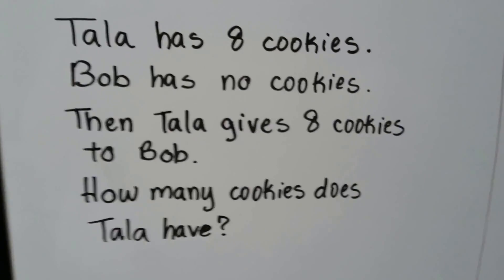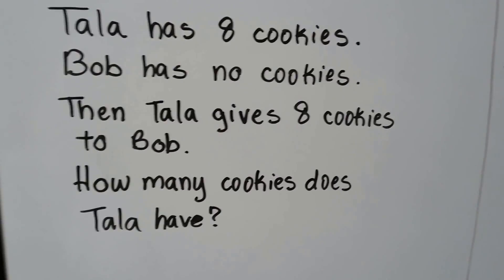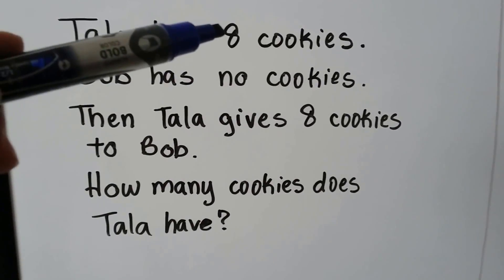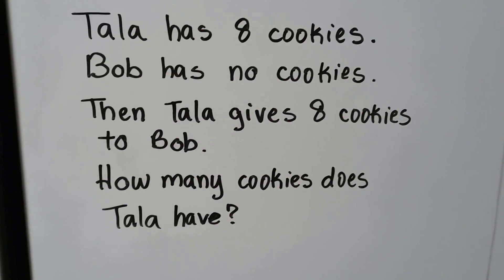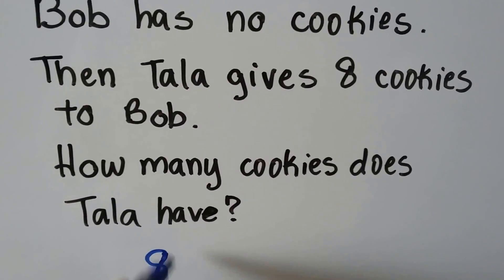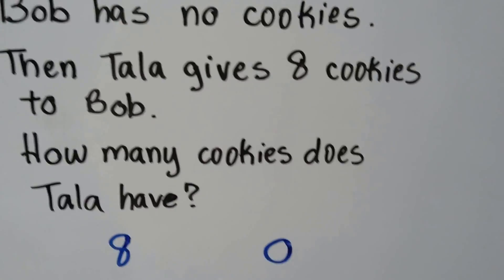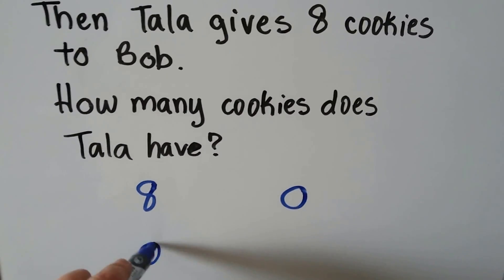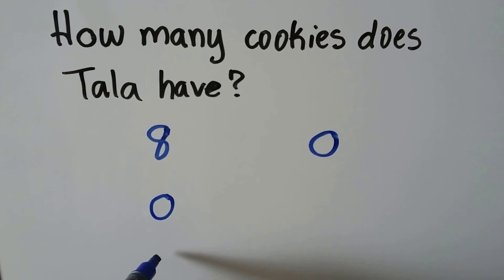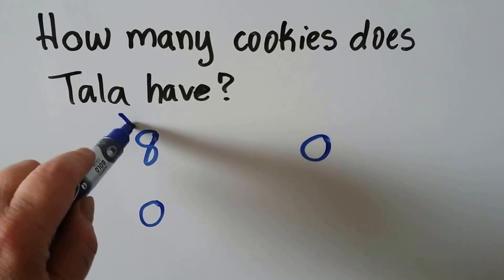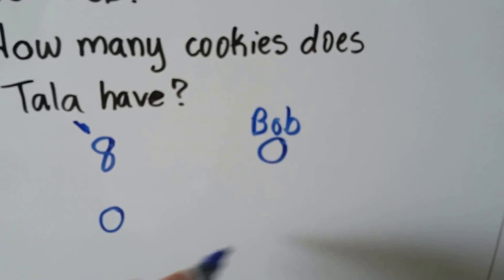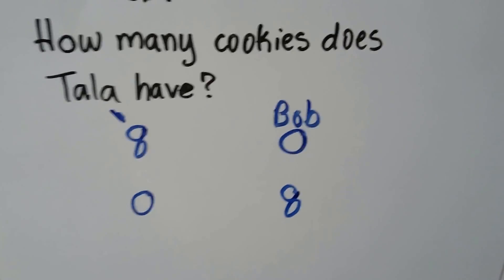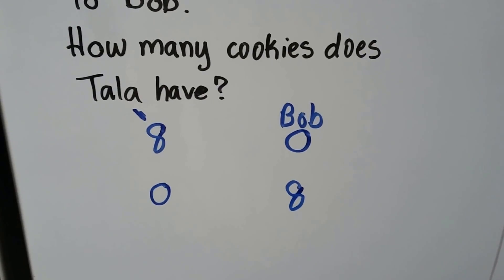Tala has eight cookies. Bob has no cookies. Then Tala gives eight cookies to Bob. How many cookies does Tala have? She had eight, he didn't have any, and she gave the eight cookies to Bob. So now Tala has zero and Bob has eight — it's like they switched. So how many does Tala have? She has zero.